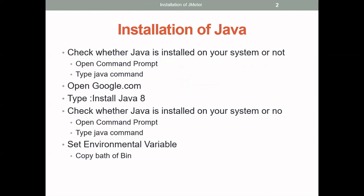Java version above 1.8 is a prerequisite for installation of JMeter. Here are step-by-step installation steps for Java. First, before starting the installation, we need to check whether Java is already present in the system or not.